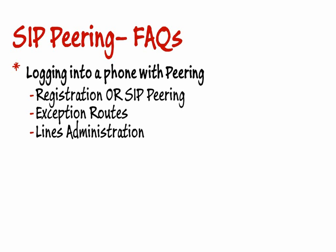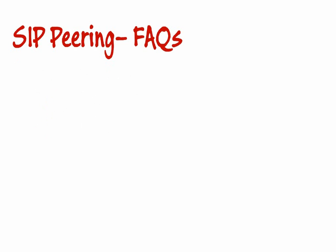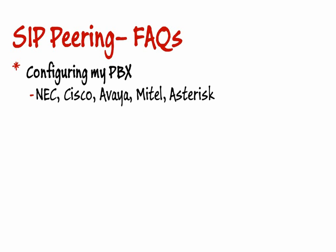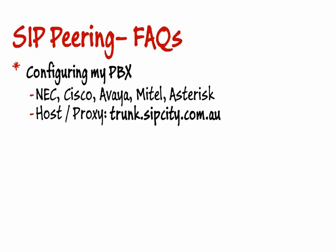How do I configure my IP PBX? We do have a number of configs for NEC, Cisco, Veo, Mitel, and a bunch of Asterisk implementations — you'll need to speak to us about those. But the main setting to configure is the host or proxy address of your outbound trunk, which is trunk.sipsity.com.au. If you must enter an IP address, do an NS lookup on trunk.sipsity.com.au. But generally it's 27.111.3.65.